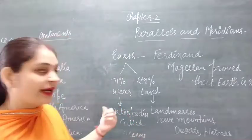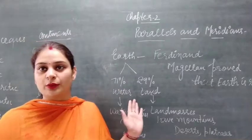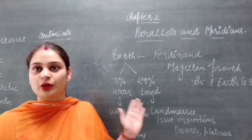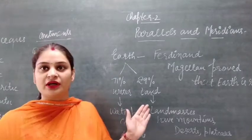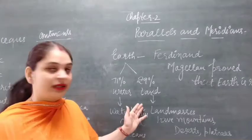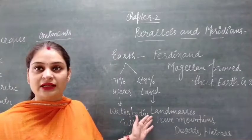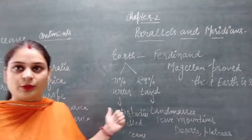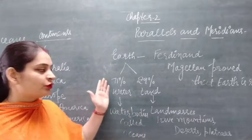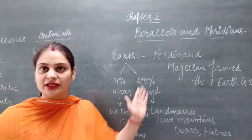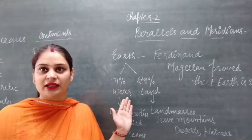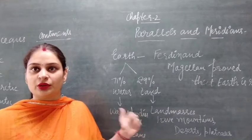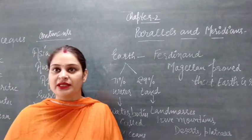Earth is divided into two parts — one is water and the other is land. About 71% of earth's surface is covered with water and 29% is covered with land. Land has many landmasses which have mountains, plains, and deserts, and large water bodies are called oceans. Since the maximum surface is covered with water, our earth appears blue from space.